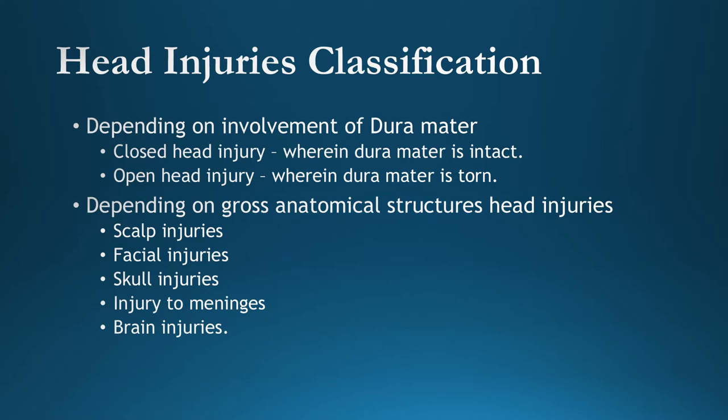The dura mater is a thin layer just below the skull. During autopsy, it is dissected into four parts to take out the brain. Based on dura mater involvement, head injuries are classified as closed or open. Regarding gross anatomical structures, head injuries can be divided into scalp injuries, facial injuries, skull injuries, injuries to meninges, and brain injuries.